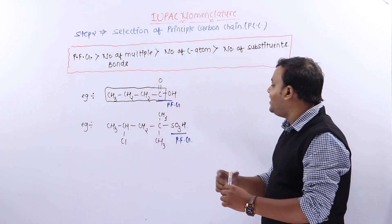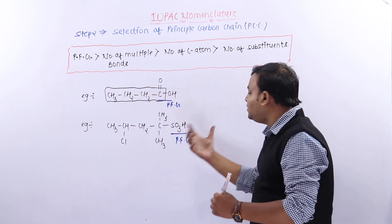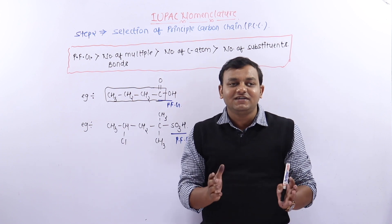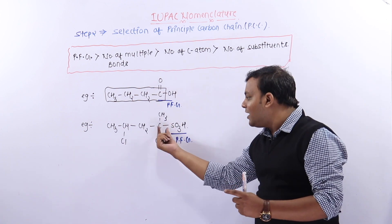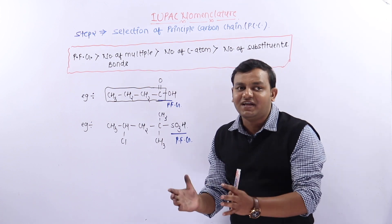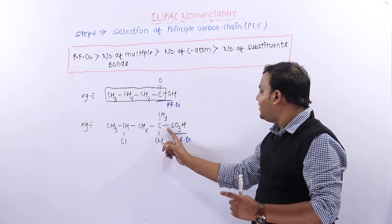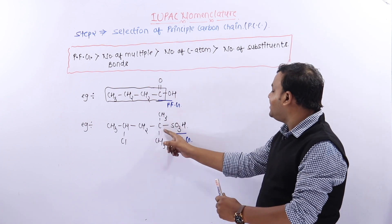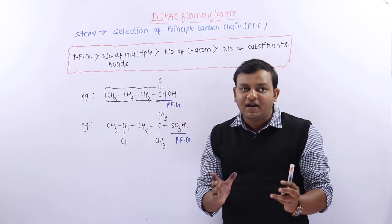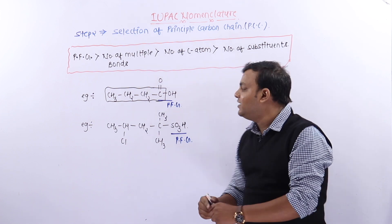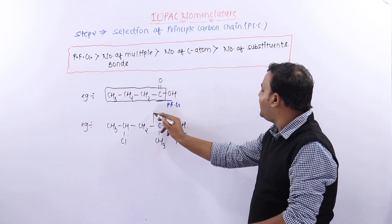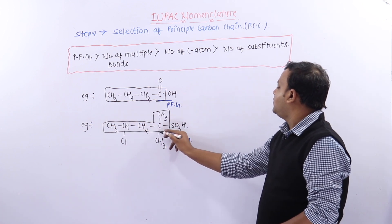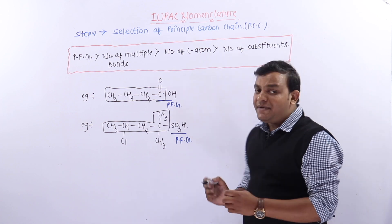Second example: if you see the principal functional group, we will select the carbon that covers it. Carbon will cover the principal function group attached. This carbon will be covered, and this becomes my principal carbon chain.